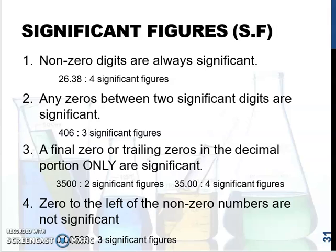Rule number two: any zeros between two significant digits are significant. So, for example, 4.06 — there are three significant figures.